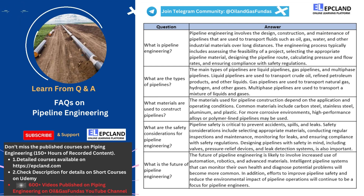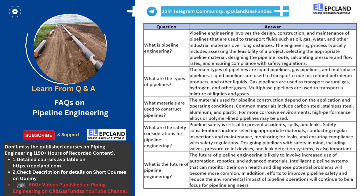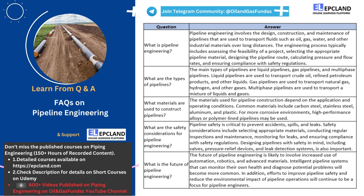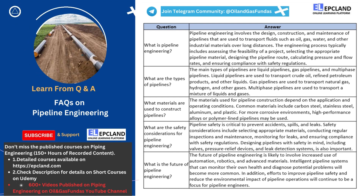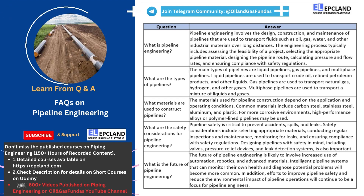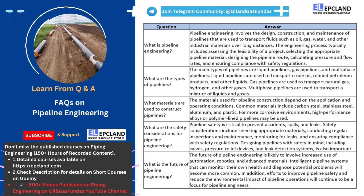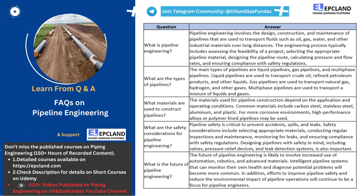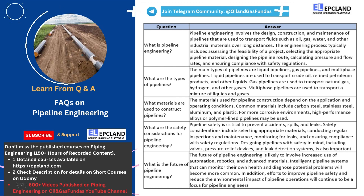Let's proceed to the second question: What are the types of pipelines? There are mainly three types of pipelines: liquid pipelines, gas pipelines, and multiphase pipelines. Liquid pipelines are used to transport liquids such as crude oil, refined petroleum products, and other liquids. These pipelines are typically made of steel and can be underground or above ground. The liquids are transported through the pipeline using pumps that create pressure and flow.